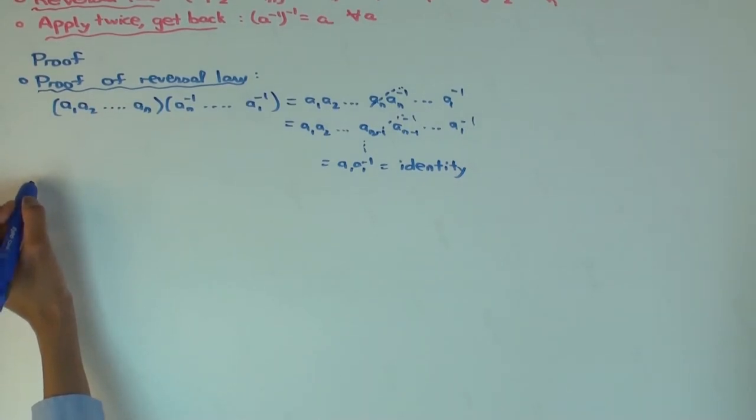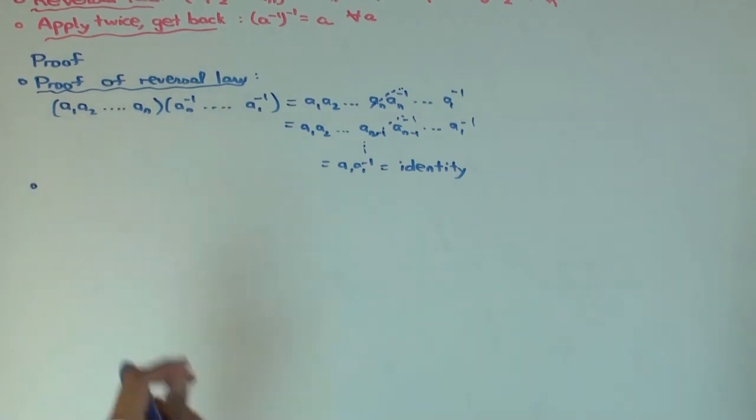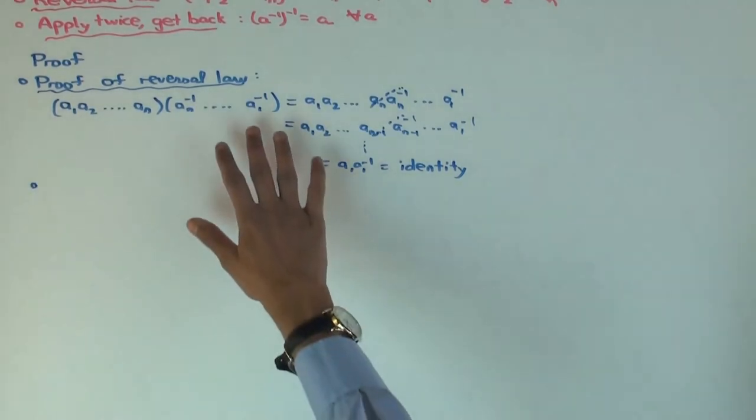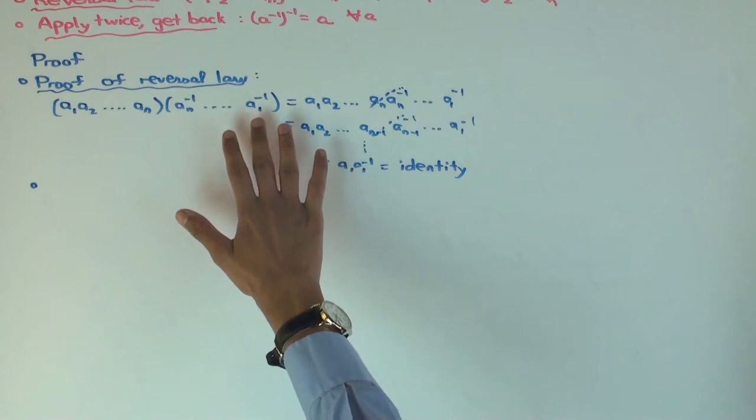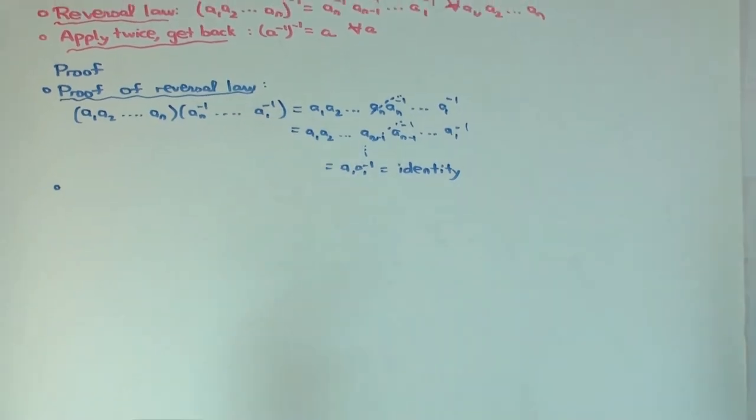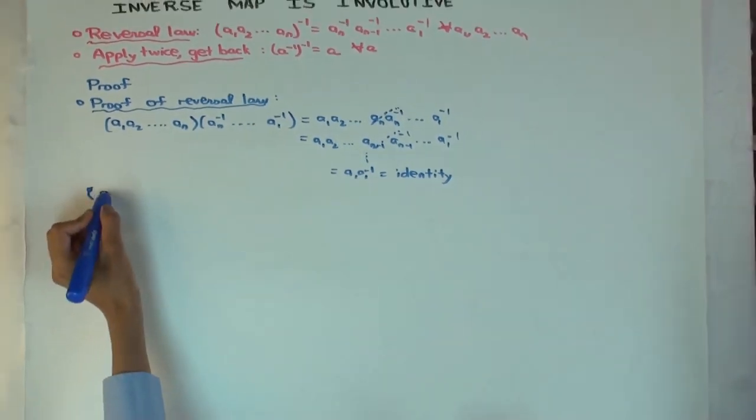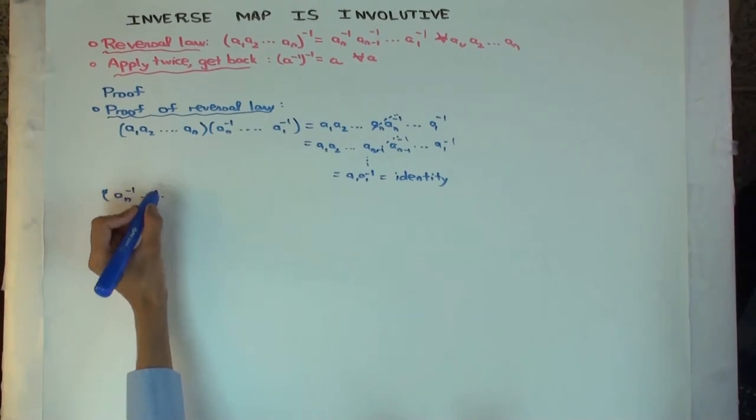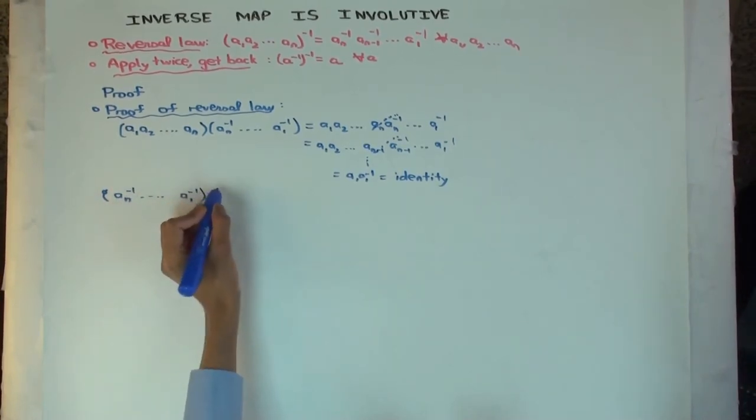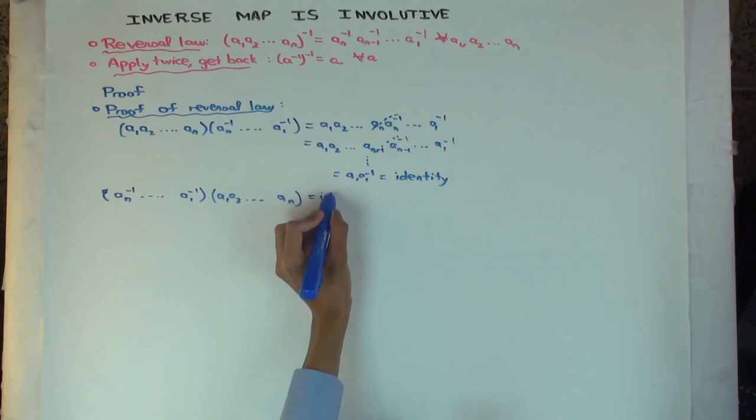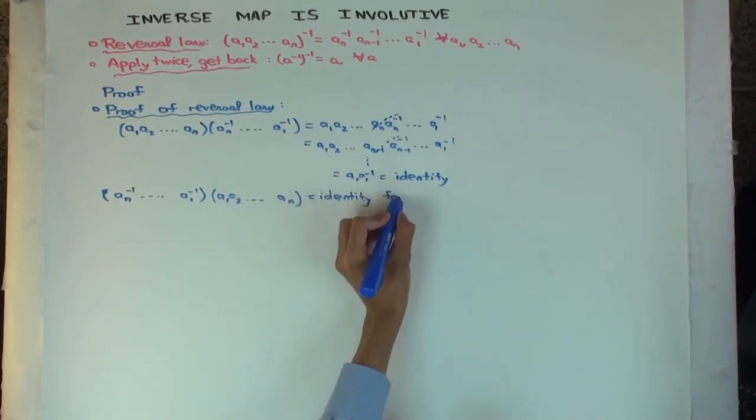Okay, what's the next thing I have to prove? The second thing? Apply twice and get back. Oh, by the way, before I go on, I should say this. So, you can actually also check that it's a two-sided inverse. So, you can check the other one also. And the proof will go exactly the same way.